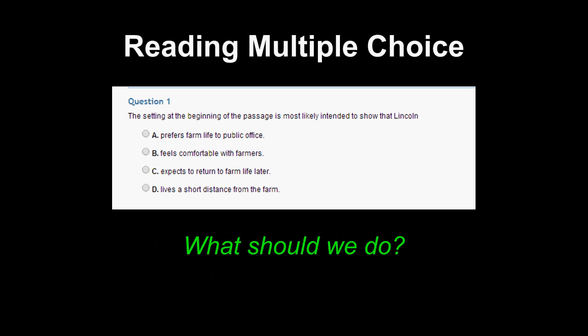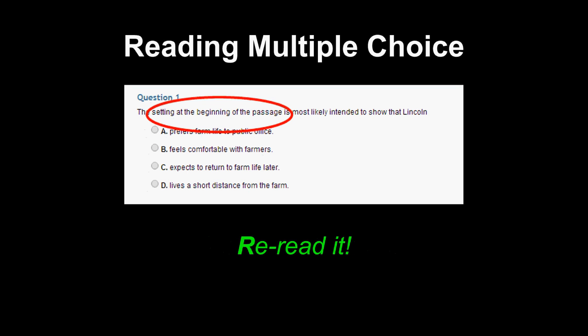Here's our first example. The question states: the setting at the beginning of the passage is most likely intended to show that Lincoln. This question deals with a passage about Abraham Lincoln, a literary story about the man's life. Which of the SPARK strategies should we apply? Let's start with re-reading, because the question specifically refers to a portion of the reading. Whenever a question refers to a portion of the reading, make sure to read it. This one refers to the beginning of the passage, so go back and re-read that portion.